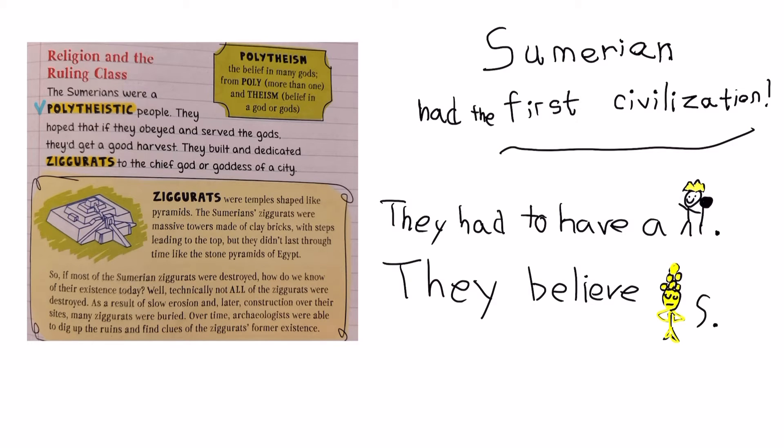So they had the first civilization. They had to have a king and they believed gods. So polytheistic means all of this. So they are polytheistic people. The rain gets really rainy, like pouring. So, well, not about the gods.